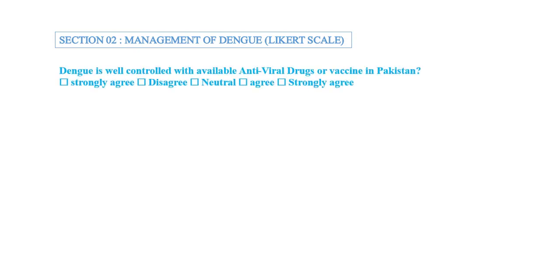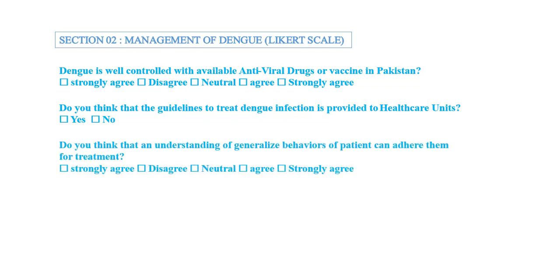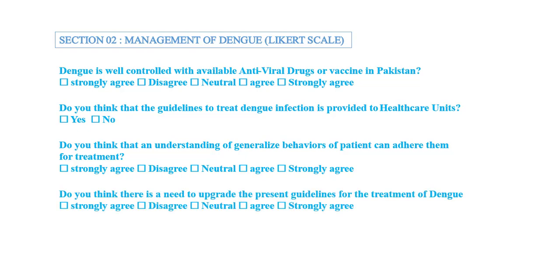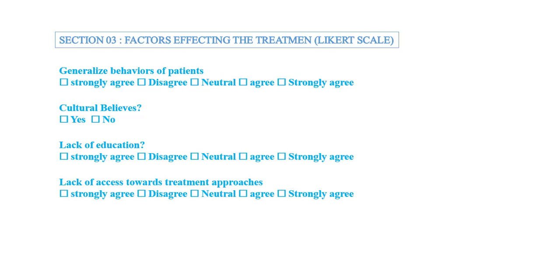In section two, you may start with a Likert scale asking general questions about the management of dengue — for example, 'Dengue is well controlled with antiviral vaccine in Pakistan,' and so on. In section three, you may ask closed-ended questions using a scale, or open-ended questions about factors affecting treatment, such as generalized behavior, cultural behavior, and lack of awareness.